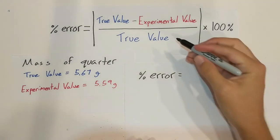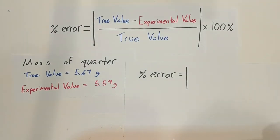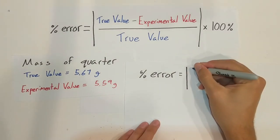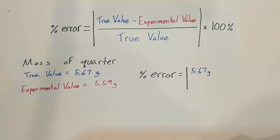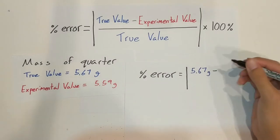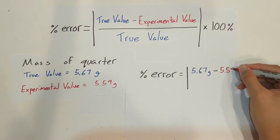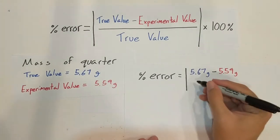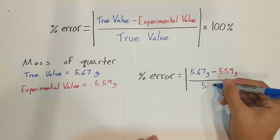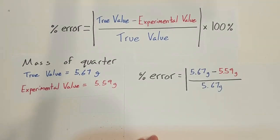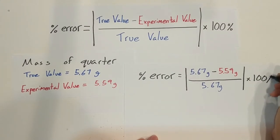So we could plug these directly into our equation here, so it would be absolute value 5.67 grams minus 5.59 grams divided by our true value, which is what we found online, so 5.67 grams, all times 100 percent.